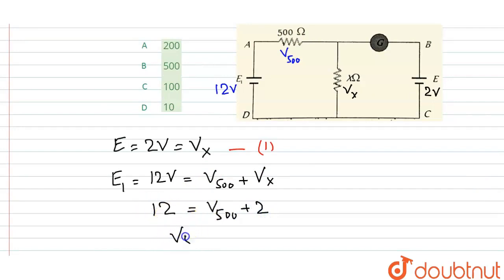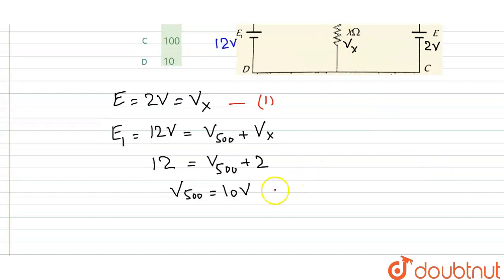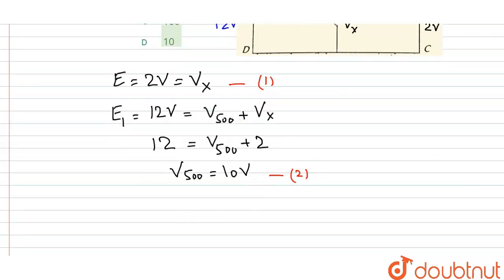Let us mark this as equation number 2. Now we can find the current also. So this voltage equals I times R, that equals 10 volts.